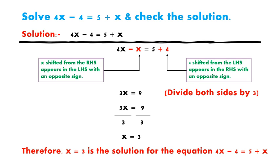Here we have minus 4 on the left side and plus x on the right side. So we have to shift x from RHS which appears in the LHS with an opposite sign, and 4 shifted from the LHS appears in the RHS with an opposite sign. So it looks like 4x minus x is equal to 5 plus 4. Now 4x minus x we get 3x, and 5 plus 4 is equal to 9.